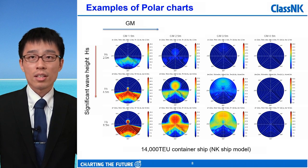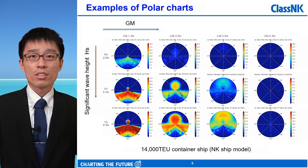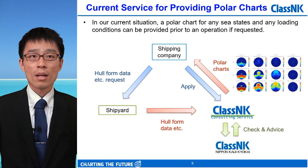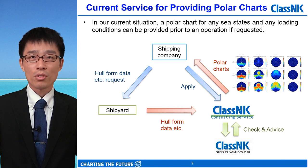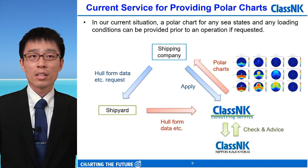Here is an example of a polar chart. This is the result assuming a 40,000 TEU container ship using an NK ship model. It is clear that the larger the GM, the less parametric rolling risk there is. The smaller GM is more likely to cause parametric rolling at a relatively lower wave height. In our current situation, we can provide a polar chart for any sea state and any loading condition if requested.